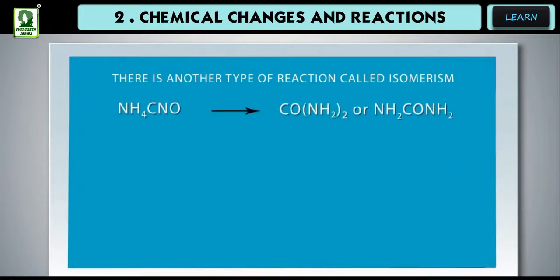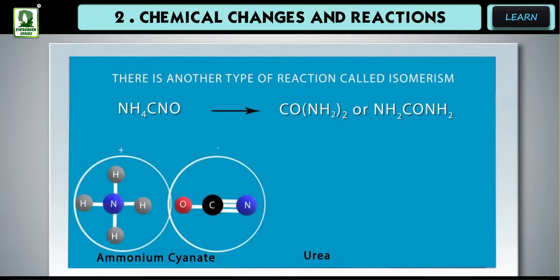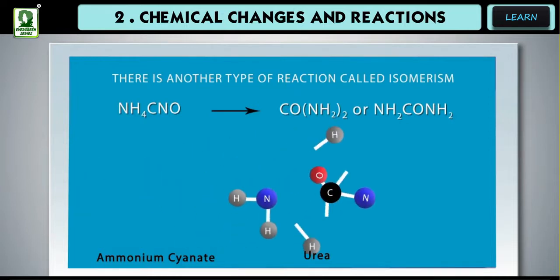NH4CNO ammonium cyanate upon heating turns to CO(NH2)2 urea or NH2CONH2. Ammonium cyanate isomerizes to form urea.